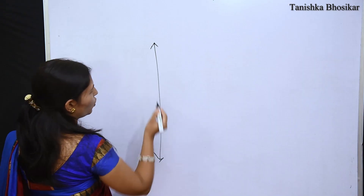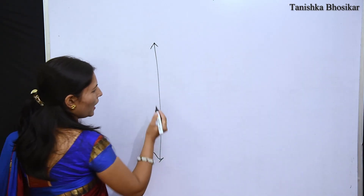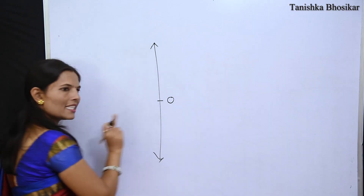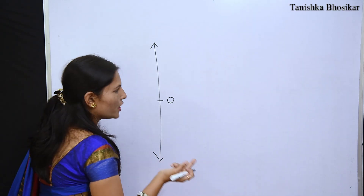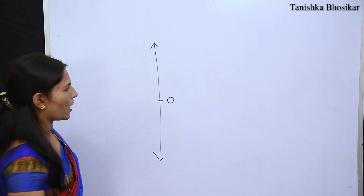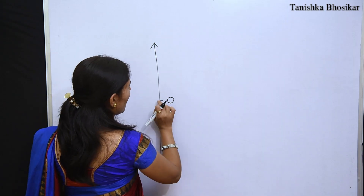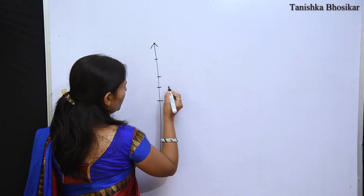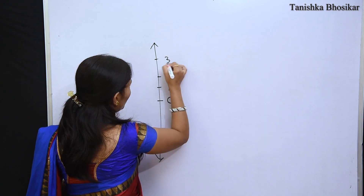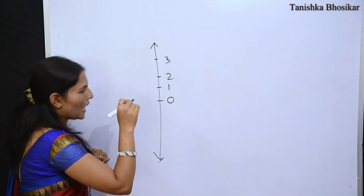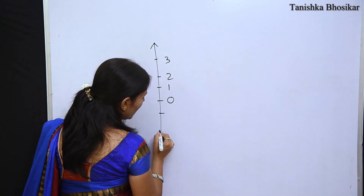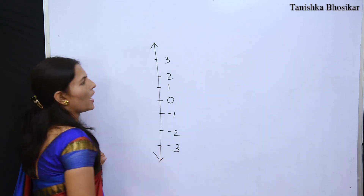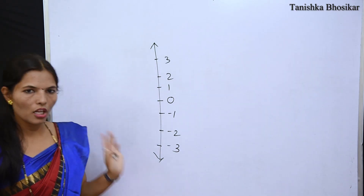In this way also, if you have a vertical line, you will find the central point and that is the origin. If you have a vertical line, the upper side of the vertical line shows positive numbers: plus 1, 2, 3, 4 up to infinity. And the lower side shows negative numbers. In this way you can show the number line also.